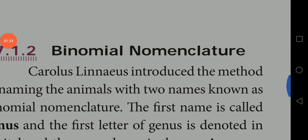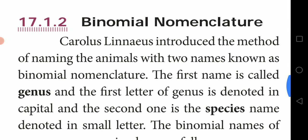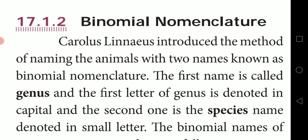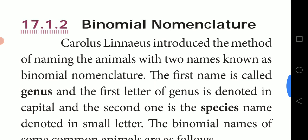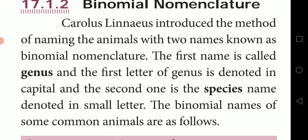The next topic we are going to see is binomial nomenclature. What is binomial nomenclature? Nomenclature means the method of naming any organism. Binomial nomenclature means any organism should possess two names — these are called binomial names, also called scientific names. The scientist Carolus Linnaeus introduced the method of naming animals with two names as binomial nomenclature.